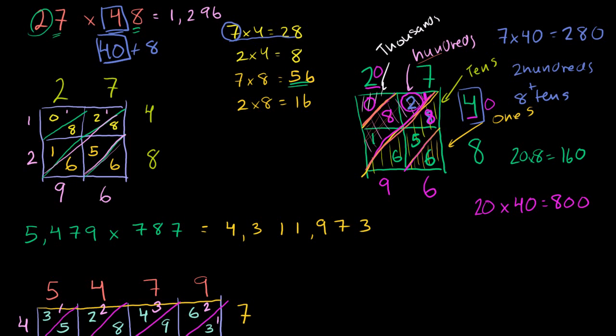Then we add up all the hundreds. This is 100 plus 200 plus 800 plus 100, or 1,200. So you write 2 in the hundreds place. 1,200 is the same thing as 2 hundreds plus 1,000. And now you only have 1,000 in your thousands diagonal, so you write that 1 right there. And that's exactly how we do it.